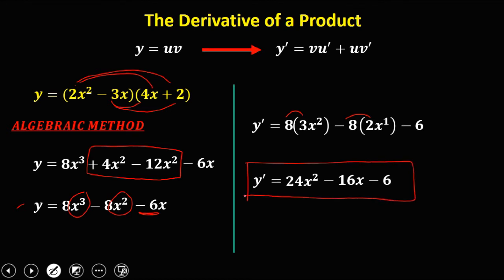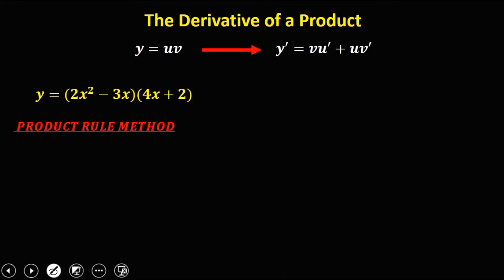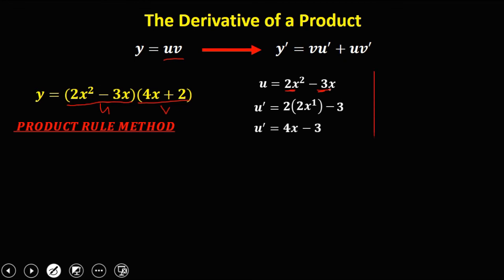Using the product rule method: u is (2x squared minus 3x) and v is (4x plus 2). Find u prime: the derivative of 2x squared is 4x, and the derivative of negative 3x is negative 3, so u prime equals 4x minus 3. For v prime: the derivative of 4x is 4, and the derivative of 2 is zero since it's a constant, so v prime equals 4.